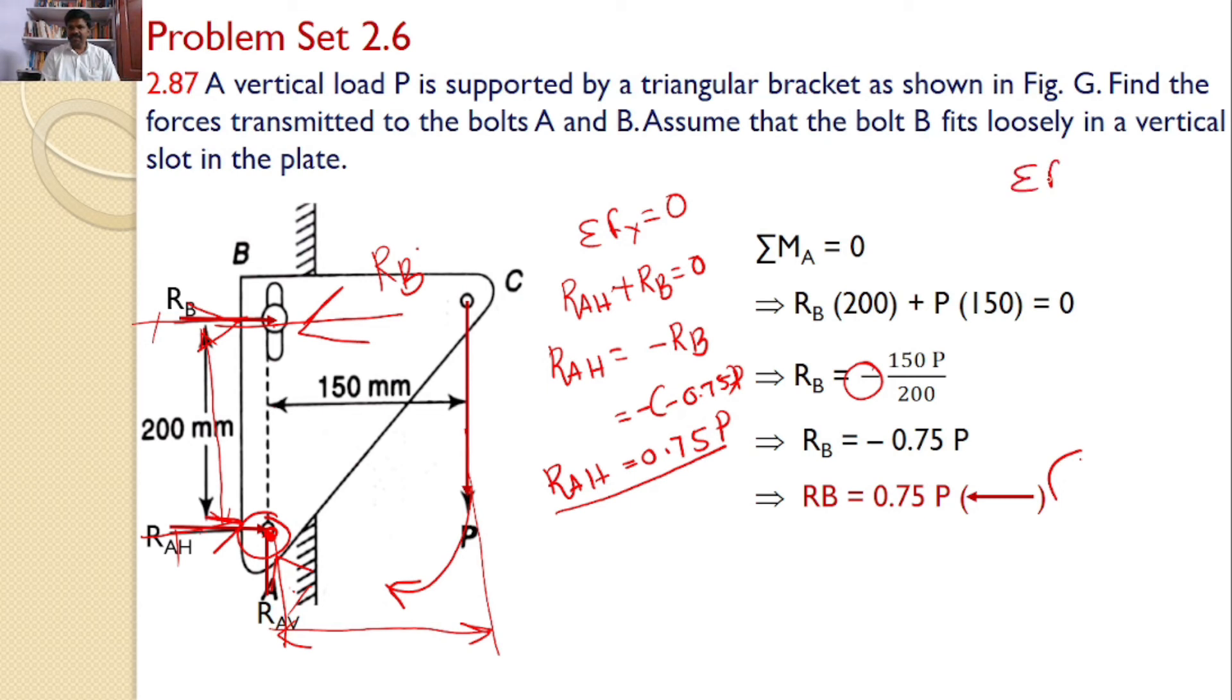And by considering sigma Fy equals 0, I can say RAV is acting in the upward direction, P is acting in the downward direction. So, RAH equals P.